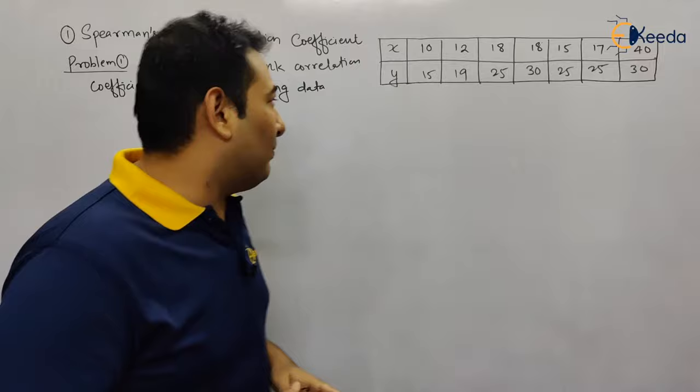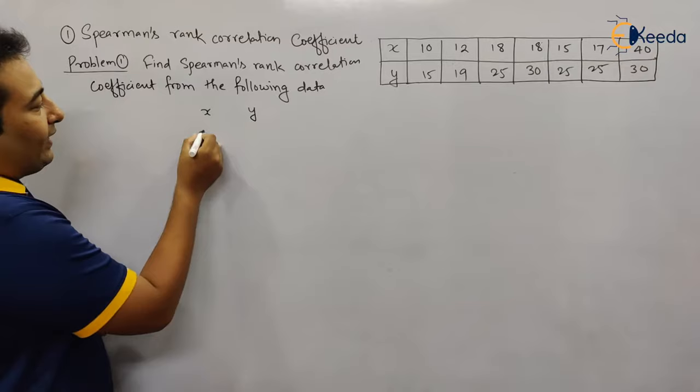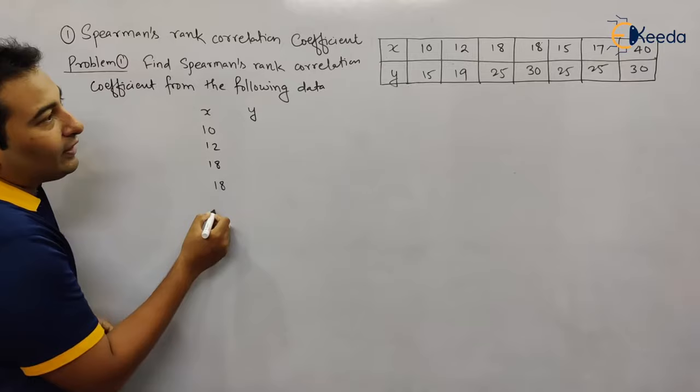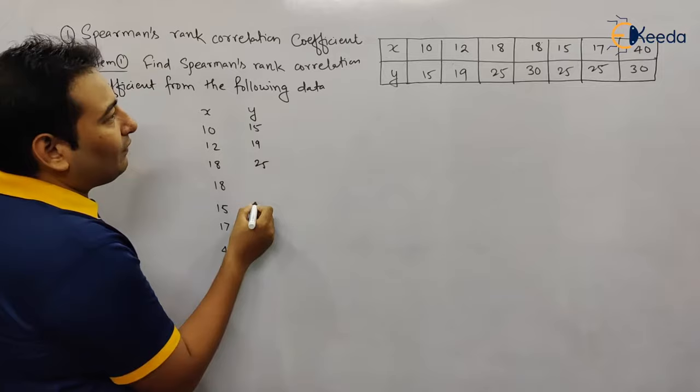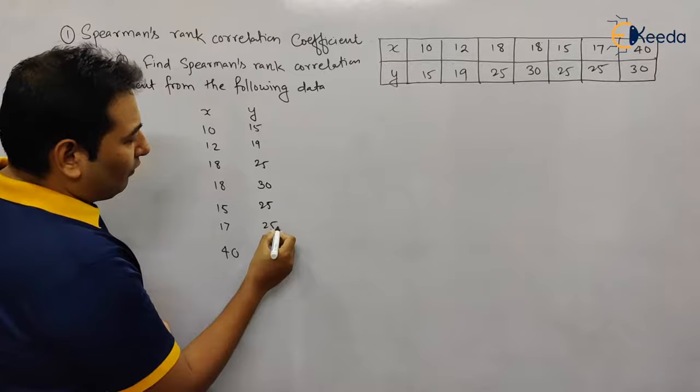First of all, we need to make a table. The X data is: 10, 12, 18, 18, 15, 17, and 40. The Y data is: 15, 19, 25, 30, 25, 25, and 30.